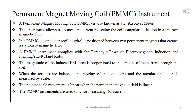When the torques are balanced, the moving coil stops and the angular deflection is measured by scale. The pointer scale movement is linear when the permanent magnet field is linear. The PMMC instrument is used only for measuring DC current.